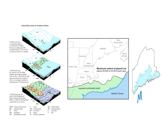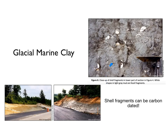The ground rebound dropped sea level back down and created what's called marine limit — the inland extent of the ocean in Maine. This line shows all the area in our state that was underwater about 14,000 years ago, which is a pretty remarkable thing. If you've got clay in your backyard, there's a good chance there could be shell fragments in it that could be carbon dated to about 14,000 years old — it's remnant of when this area was covered by ocean.